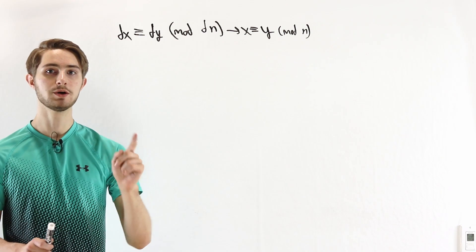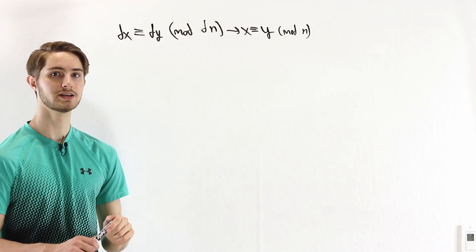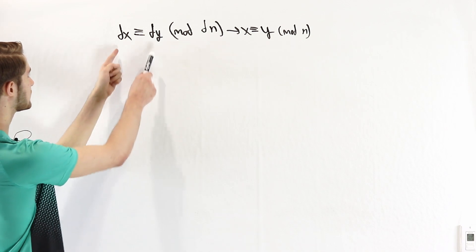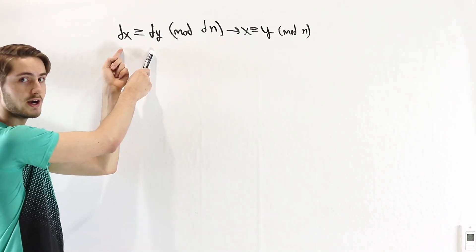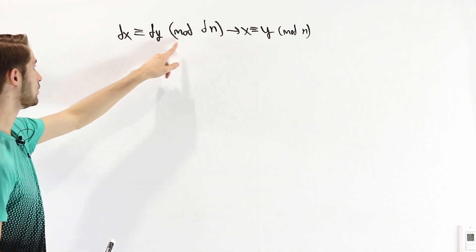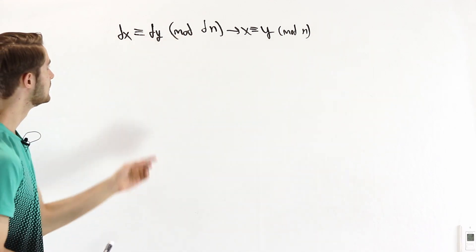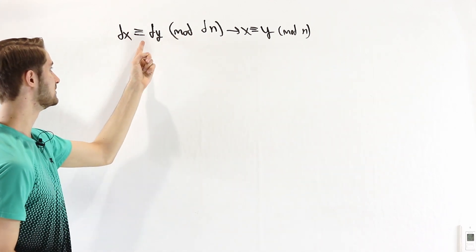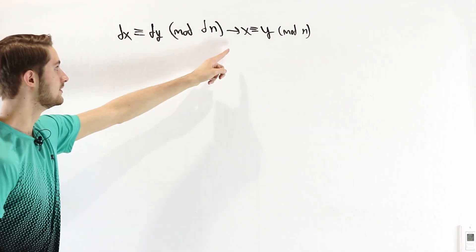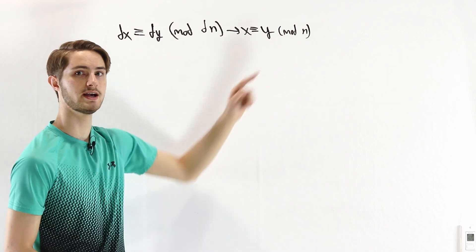Now we're going to look at one more cancellation rule in modular arithmetic. This time, instead of a shared factor just between x and y, we look at a shared factor across all three numbers in the congruence: if dx ≡ dy mod dn, then x ≡ y mod n.